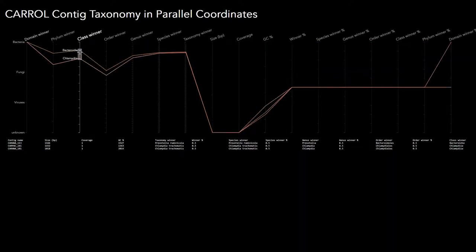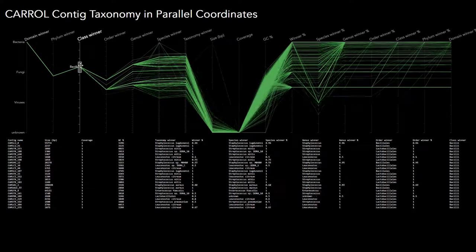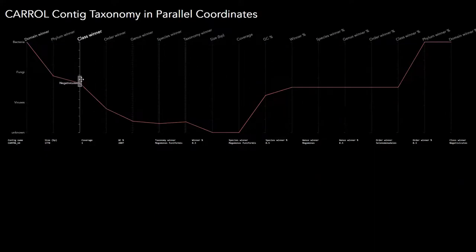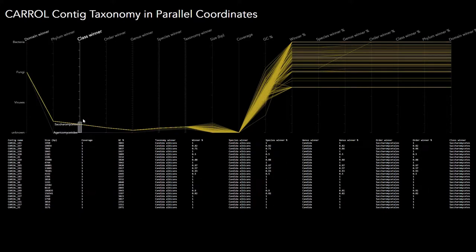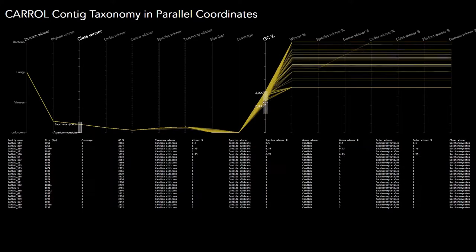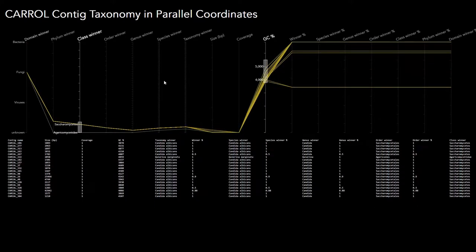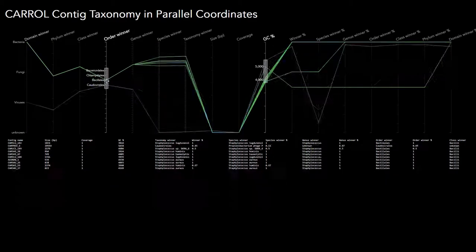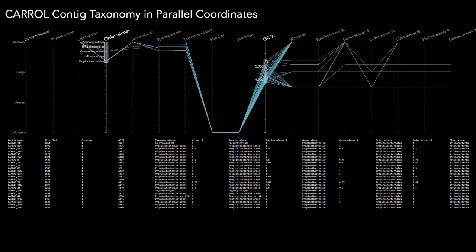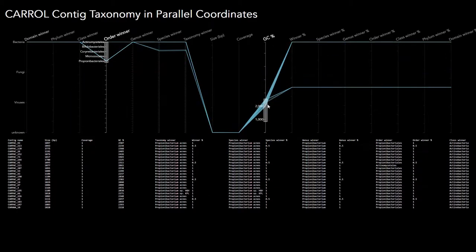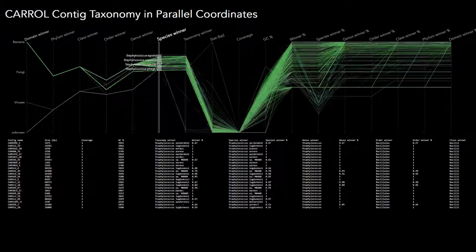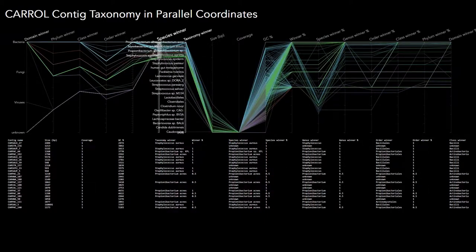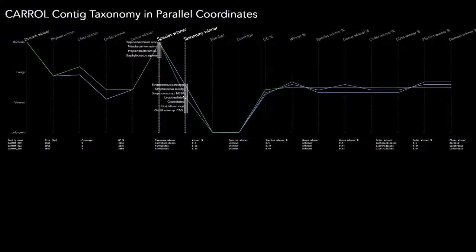A dense parallel coordinate line graph, titled Carroll-Contig taxonomy, is quickly scanned. By sliding the navigational tool up and down any one of the 17 parallel lines that correspond to the variables on the horizontal axis, the user significantly alters the graph's zigzagging, color-coded lines.